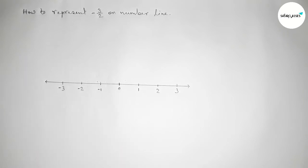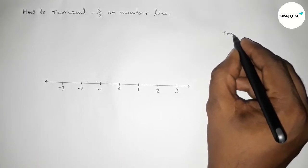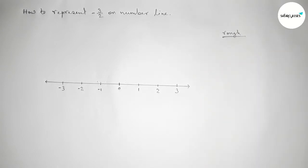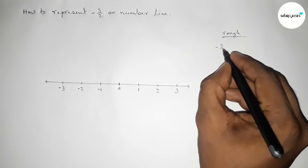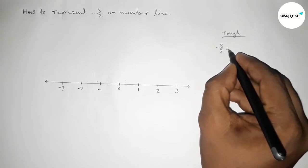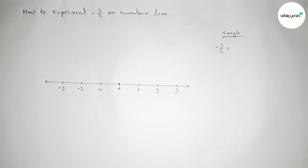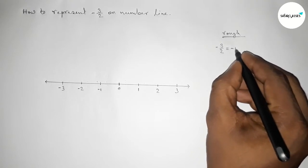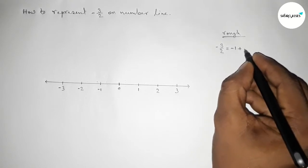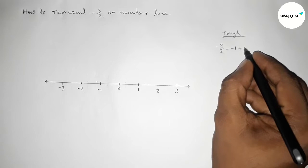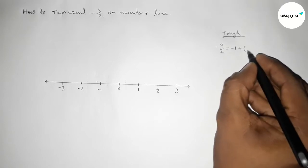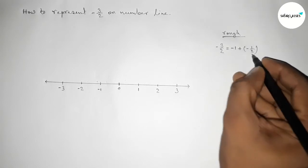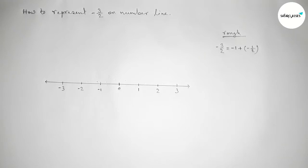Now roughly discussing here some important calculation. So here minus three by two. So we can write minus three by two as minus one plus minus one by two. Now if we simplify this...